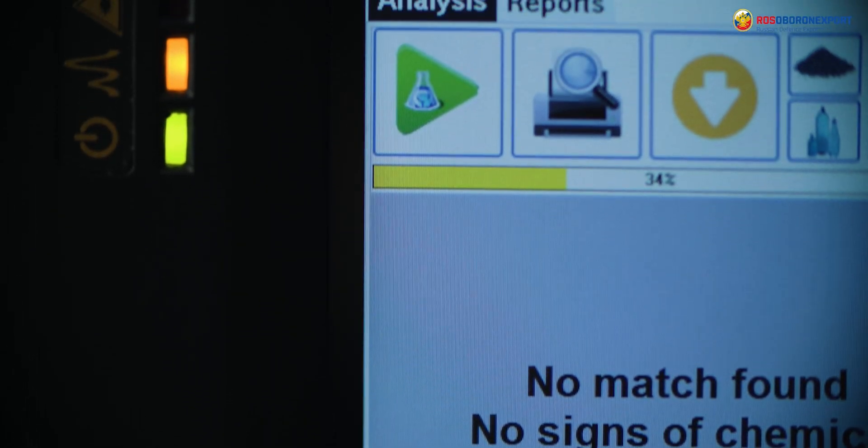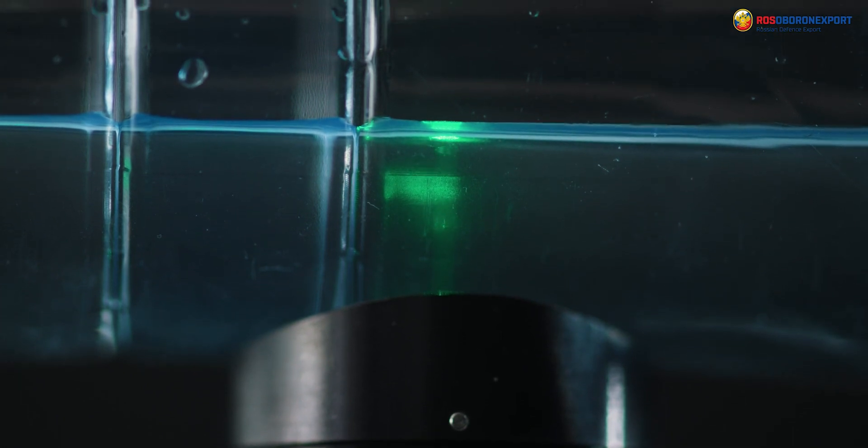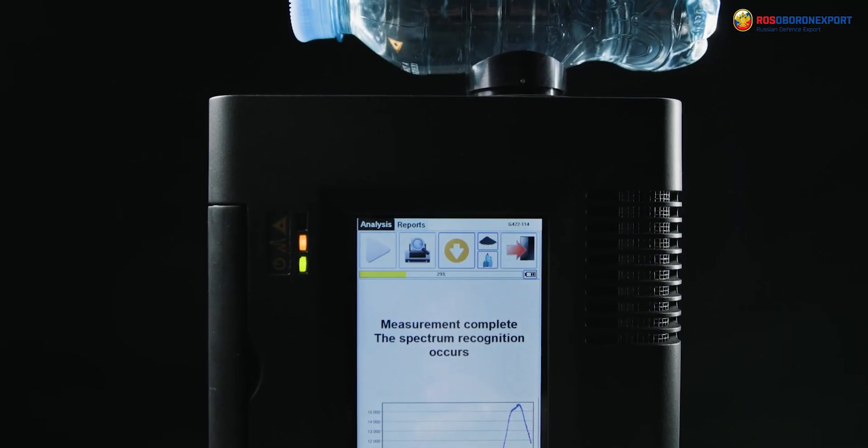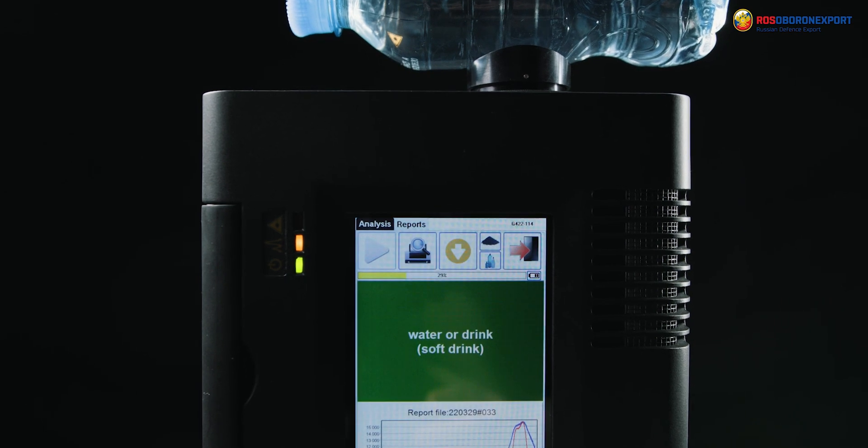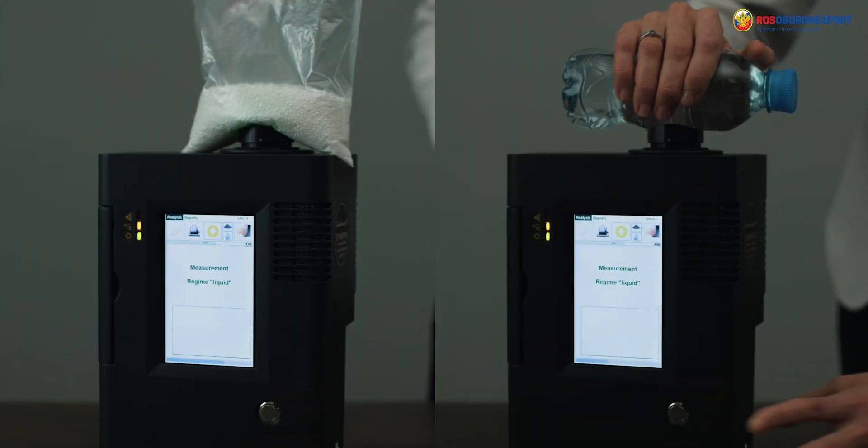The device uses Raman Spectroscopy, a non-destructive chemical analysis method that provides detailed information about the chemical structure of the material. This technology is used to very quickly identify a material or distinguish it from others.